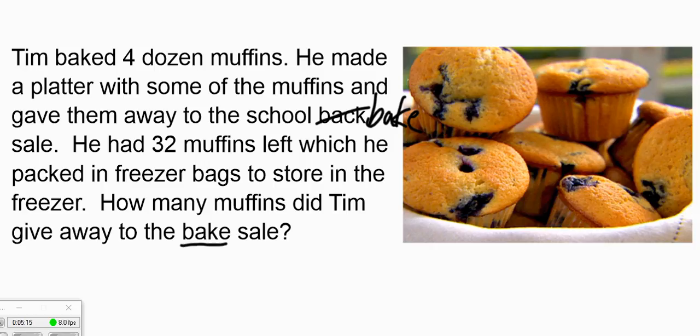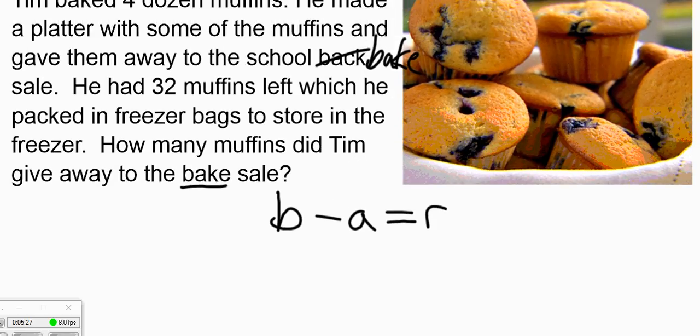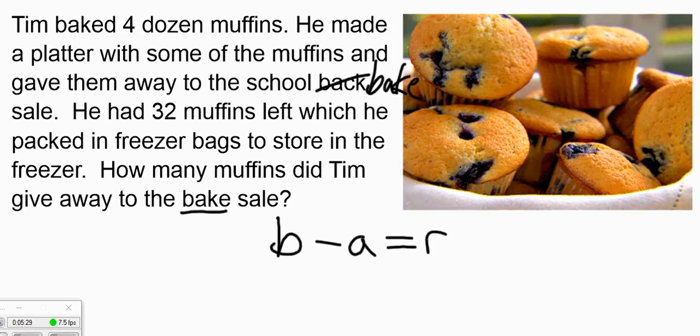We already understand the pattern as we've talked about it. It's always easier when it flows like that. Let's throw our bar up there. From the bar we want to say, okay, do we have a beginning amount? Beginning amount, four dozen muffins. Four times a dozen, four times 12, gives us 48 muffins.